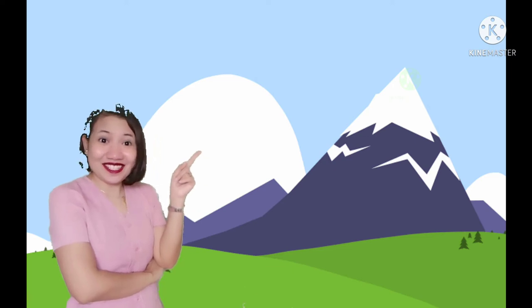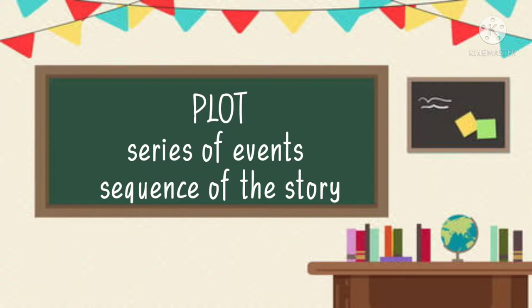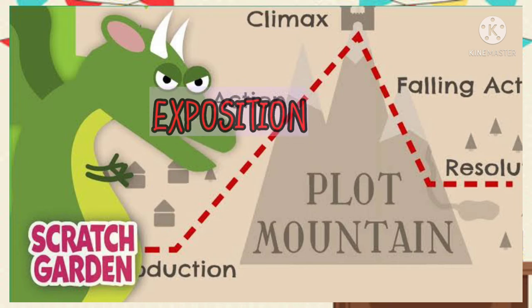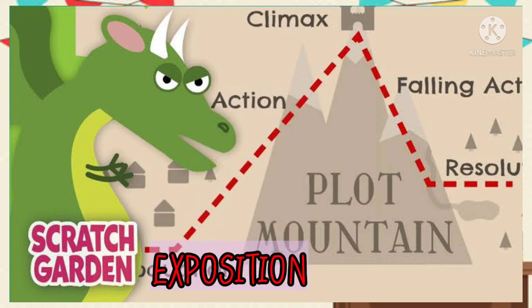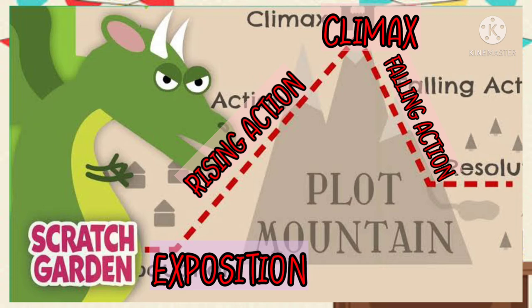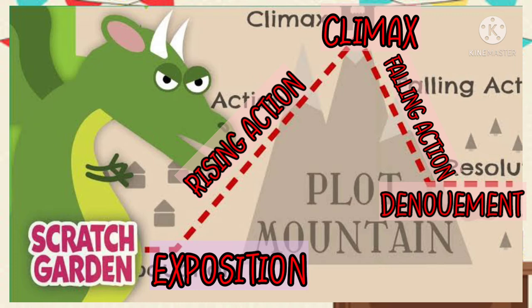Can you see that mountain? Yes, and it reminds me of another element of a short story, which is the plot — a series of events or sequence of the story. Let me show you a diagram of a plot. First is the exposition, or the beginning of the story. Followed by the rising action, where the conflict starts to build. Followed by the climax, the peak of the story, where the most exciting part takes place and discoveries and mysteries start to unfold. Then we have the falling action, where the conflict starts to resolve. And the last one is the denouement — the ending of the story, where the solution takes place.